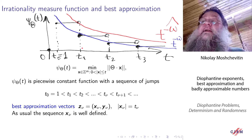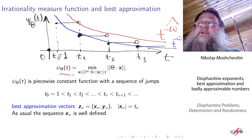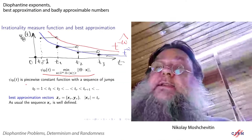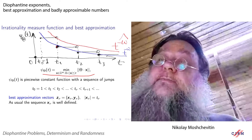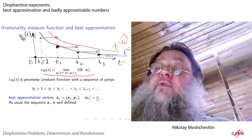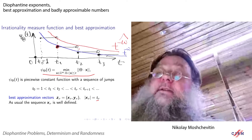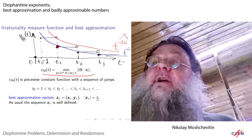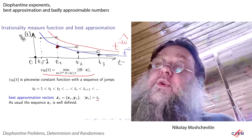So I draw here the graph. This is the definition of the irrationality measure function from my previous slide. I am showing that it is a piecewise constant function. So once upon a time, at certain t_ν, we have the relative minima of this form. Then we increase t until we get another relative minimum. Until there is no other integer point, the function is constant.